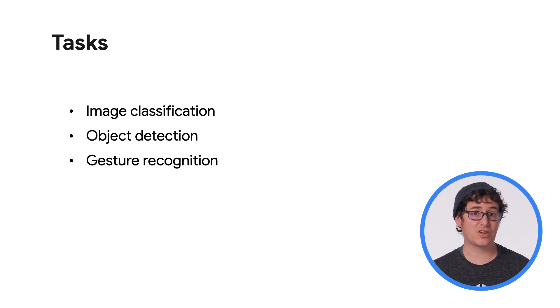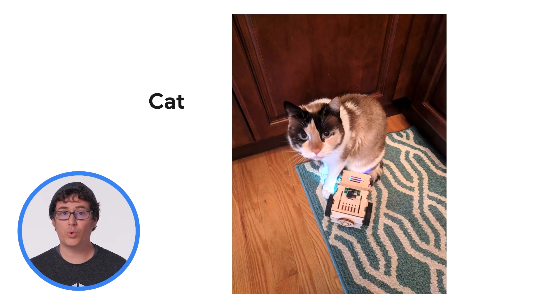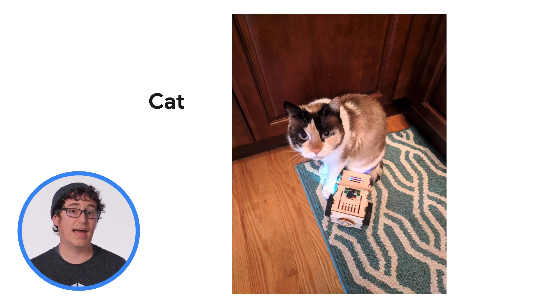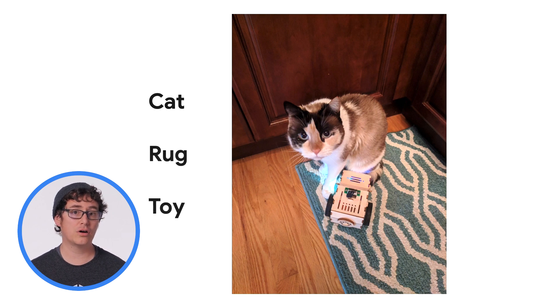Let's start by taking a look at image classification. The goal of image classification is to assign a label or multiple labels to an image. For example, with a single label classification model, the image of a cat will likely appear as cat since it's the most pronounced item in the image. However, if you use a model for multiple labels, then you might see cat, rug, or toy as possible labels.